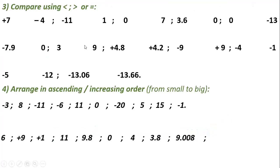Exercise number three: compare the signed numbers using less than, greater than, or equal. Positive 7 and negative 4 — any positive number is greater than any negative number. Zero and 7 — zero is less than all positive numbers, so zero is less than 7. 3.6 is a positive number and all positive numbers are greater than zero. Zero is greater than all negative numbers.